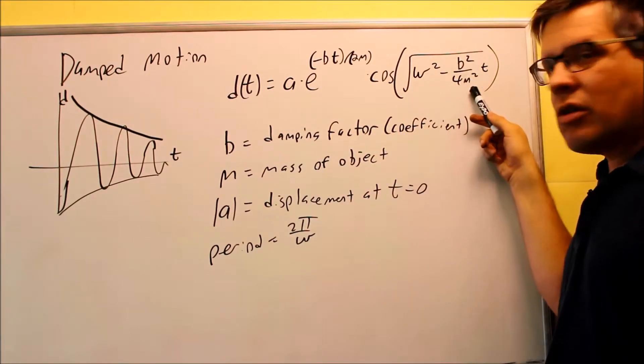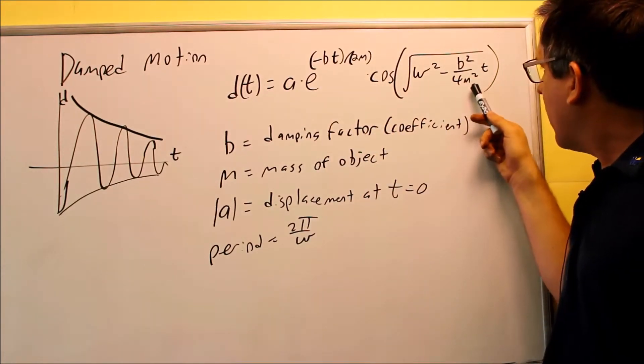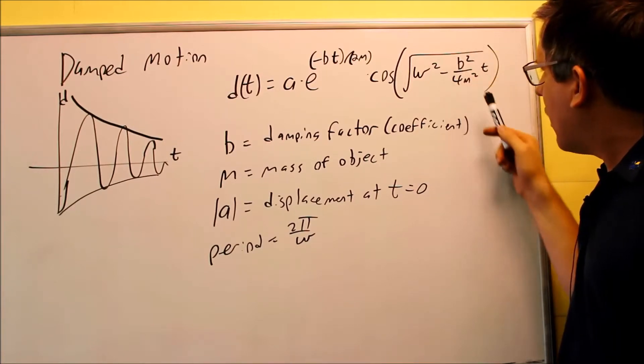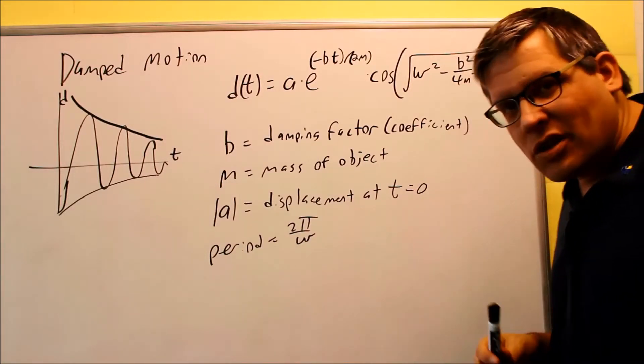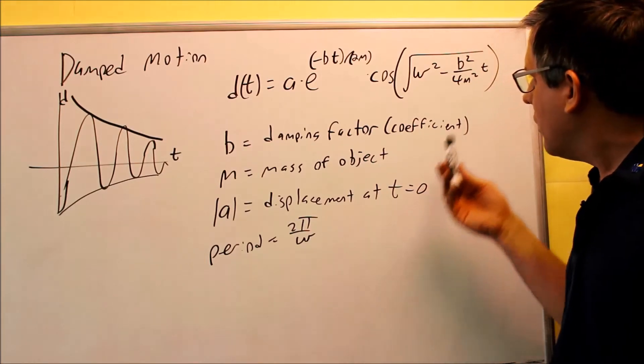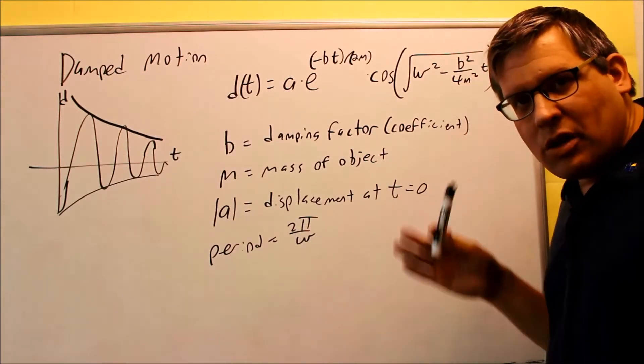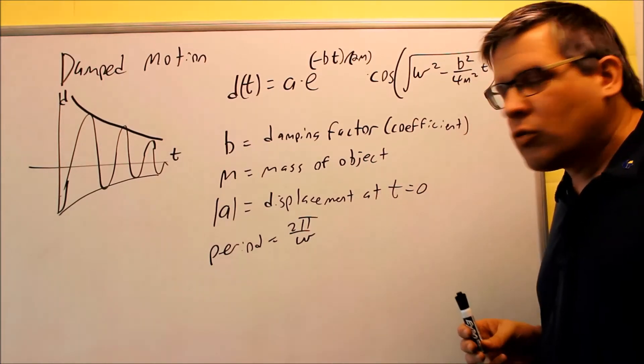If I put B equals zero inside here, what happens is that part's going to take that out, and so the whole thing simplifies down to basic simple harmonic motion. So if the B value is zero, that means that it just goes back to what it originally was before. So you can see the relationship there.